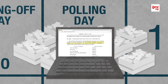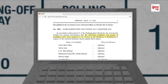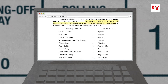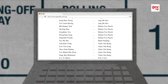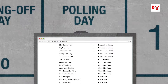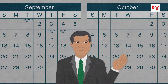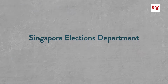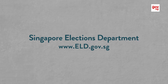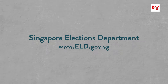After counting the overseas votes, the final results are published in the Singapore Government Gazette. Parliament will convene again at a time appointed by the President. For more information on the general election, please visit this website. Thank you.